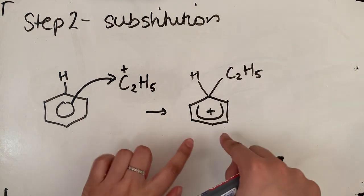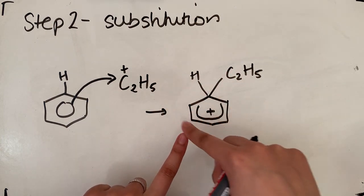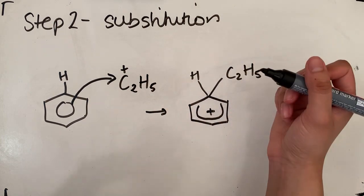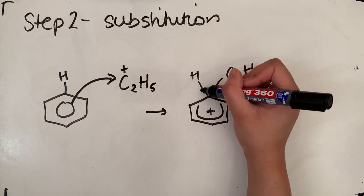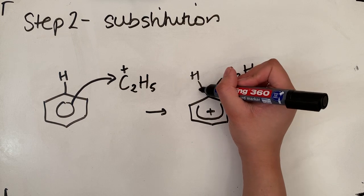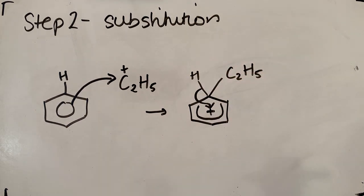So benzene always wants to go back to its delocalized structure. This is unstable. It's going to want to go back to what it was before. In order to do that needs to gain two electrons. So it's going to gain it from this carbon hydrogen bond here. So curly arrow starting from that bond there going back into that disrupted ring.